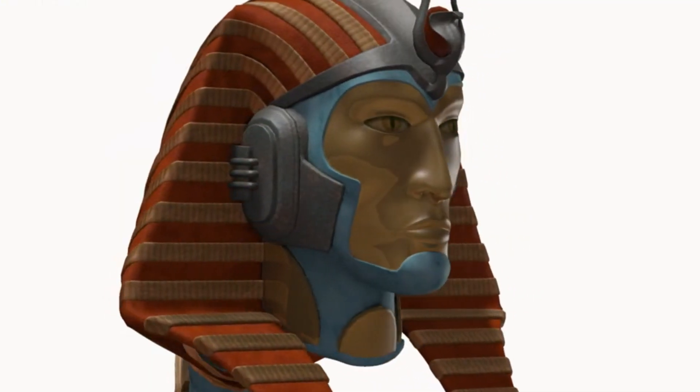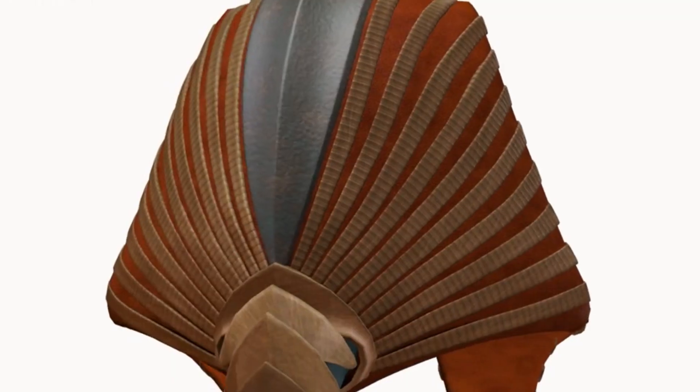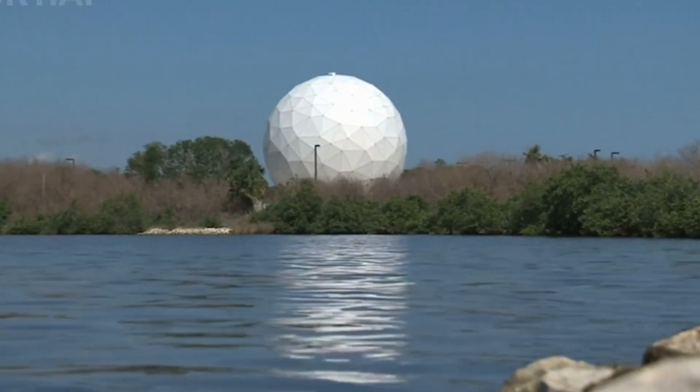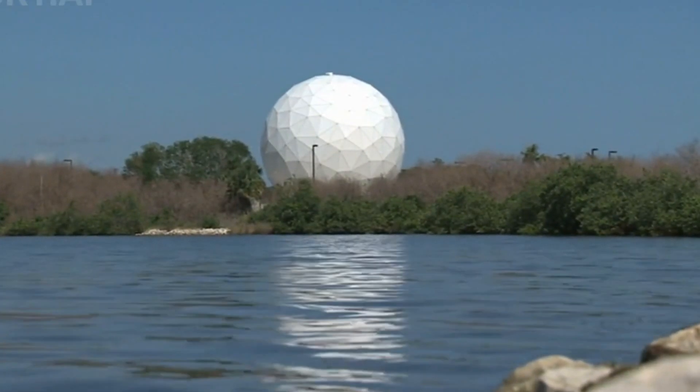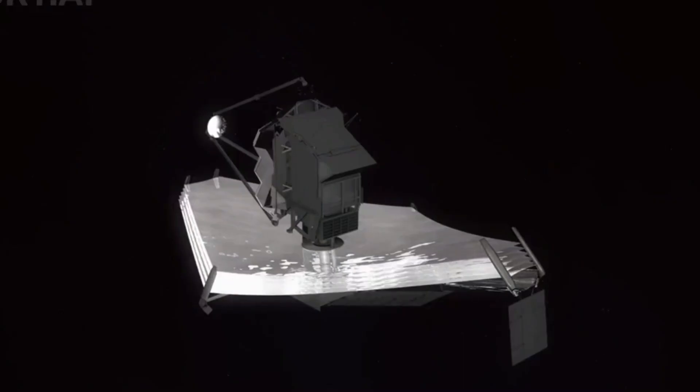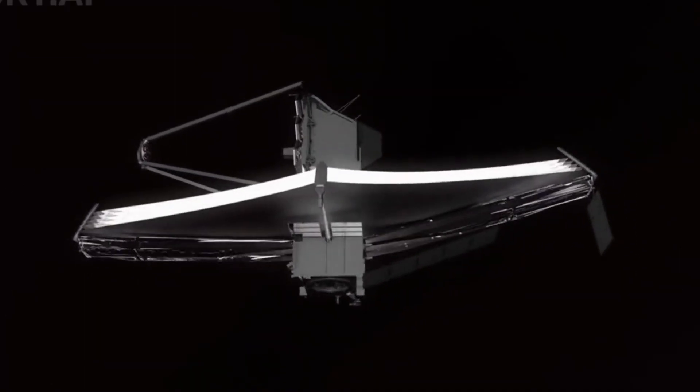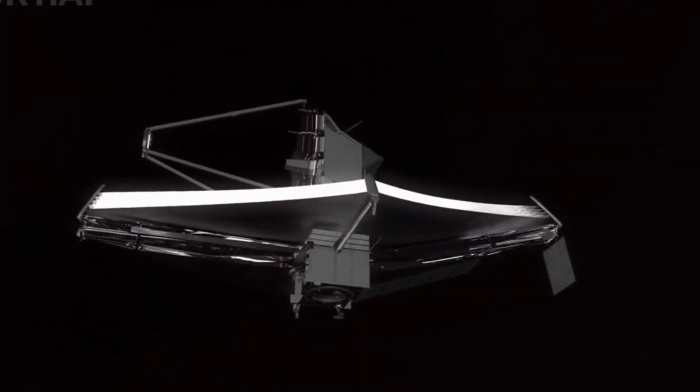But the journey to decipher Oumuamua's secrets didn't stop with just one photograph. In their determination to uncover the truth, scientists turned to the cutting-edge James Webb Space Telescope. This state-of-the-art instrument has revolutionized our ability to study the farthest and faintest objects in space.